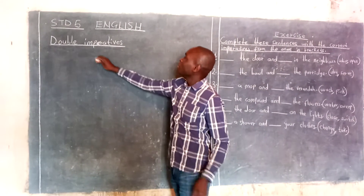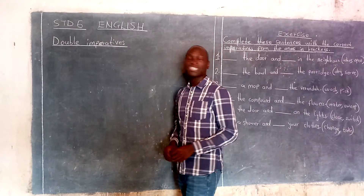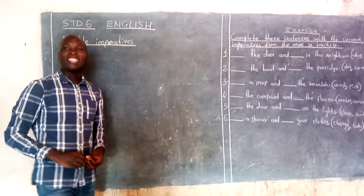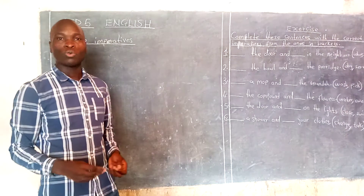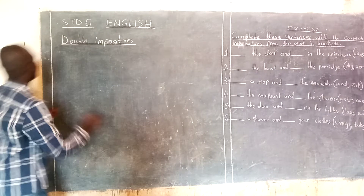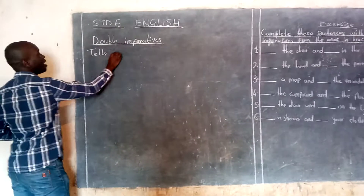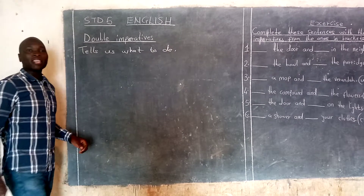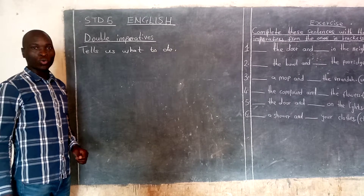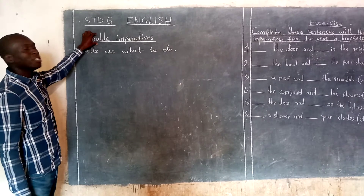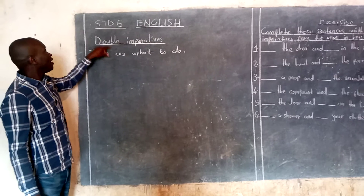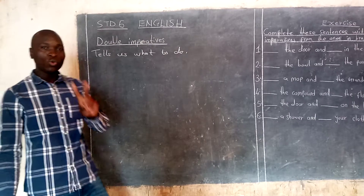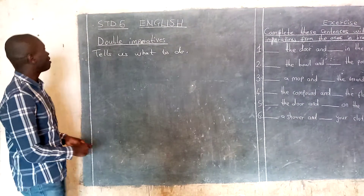Now, when you talk about double imperatives, what does it mean? From the word double, it means two. So a double imperative tells us two things to do. An imperative tells us what to do — it gives us an instruction of what you are supposed to do. Double imperative: double means two. It is a statement that gives us two instructions — it tells us to do two things. That's what you call a double imperative.